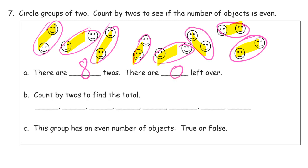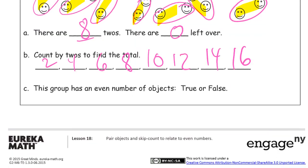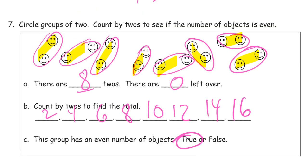Count by twos to find the total. So, that's two, four, six, eight, ten, twelve, fourteen, sixteen, right? If there's eight twos, it should be the same as two eights. So, the group has an even number of objects. Is that true or false? Oh, it's true, right? Because we're counting by twos, starting with two. And so, everything's paired up, so we know it's even. So, let's go. Thank you.